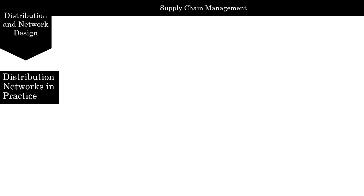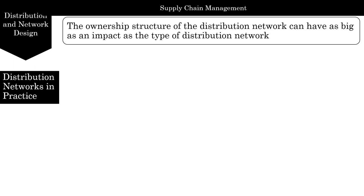Let's look at distribution networks in practice and how they affect performance. The ownership structure of the distribution network will have a huge impact on the type of distribution network. While this chapter talks about different types of physical networks, equally important is who owns each stage in the distribution network. Distribution networks that have exactly the same physical flow but different ownership structures can have very different performance. A manufacturer that owns a distribution network can control the network's actions. However, if the manufacturer does not own the distribution network — which is more often the case — a wide variety of issues need to be taken into account to optimize across the network.